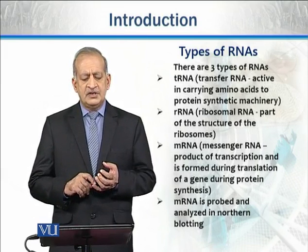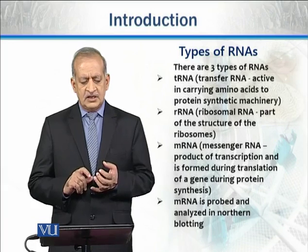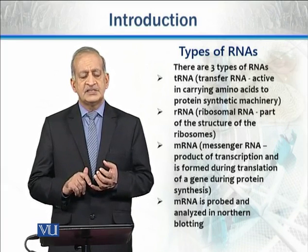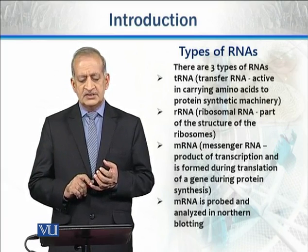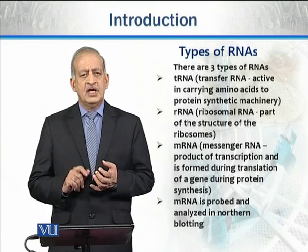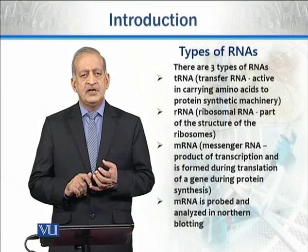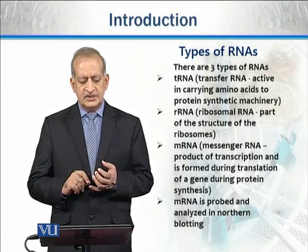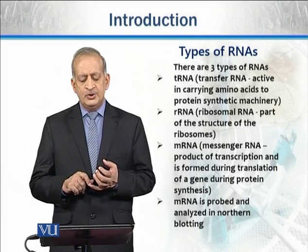Before we continue further, we should know that there are three types of RNAs. Firstly, transfer RNA — its main function is that it transfers amino acids from the cytoplasm to the protein-synthetic machinery. Secondly, ribosomal RNA — as the name indicates, it forms the structure of the ribosomes. Then there is messenger RNA — as the name indicates, it carries the message for the formation of new proteins.